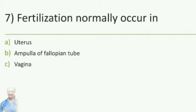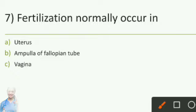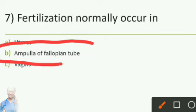Question number 7: Fertilization normally occurs in — option A uterus, option B ampulla of the fallopian tube, option C vagina. The answer is option B, ampulla of the fallopian tube.